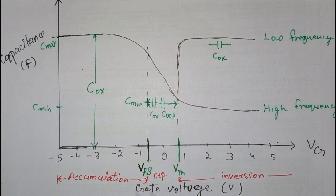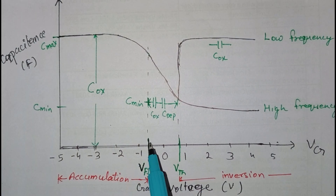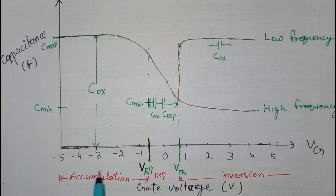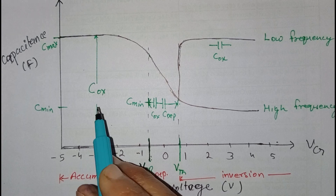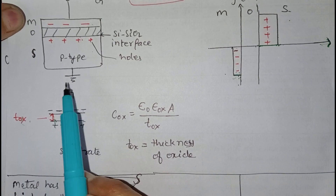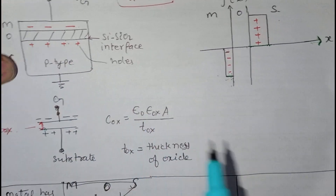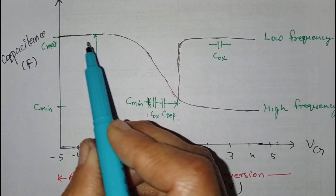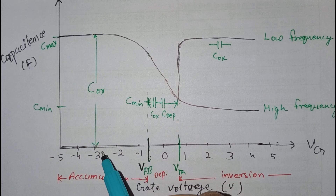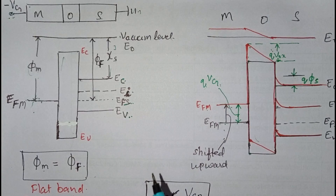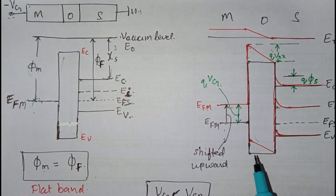Now we can draw the CV curve — capacitance versus voltage curve. The flat band voltage is negative in the case of NMOS. When we apply a more negative voltage, we enter the accumulation mode. In accumulation mode, the capacitance equals C_ox, behaving like a parallel plate capacitor, giving the maximum capacitance value, and it does not depend upon the voltage in this region.